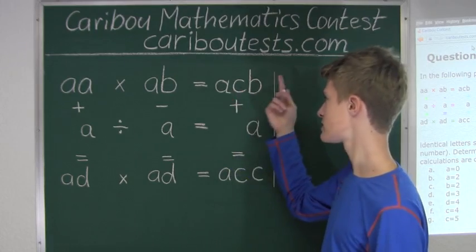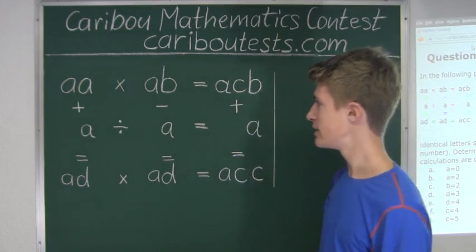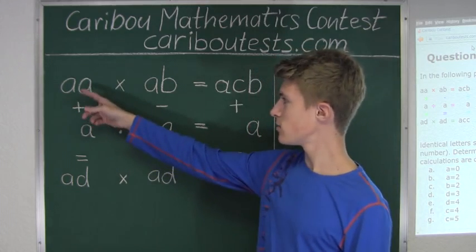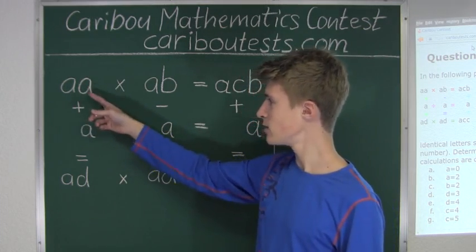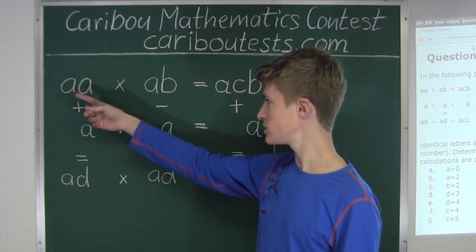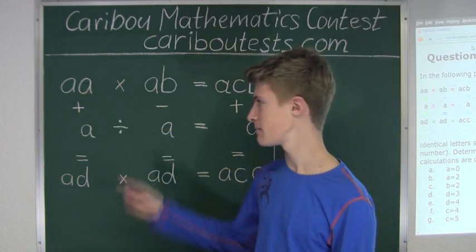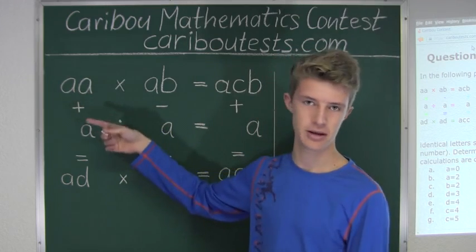And this could be, for example, 234. And now, if we have a number which has two of the same digits, like for example here AA, those two digits must be the same. So for example, it could be 22 or 33, and so on.